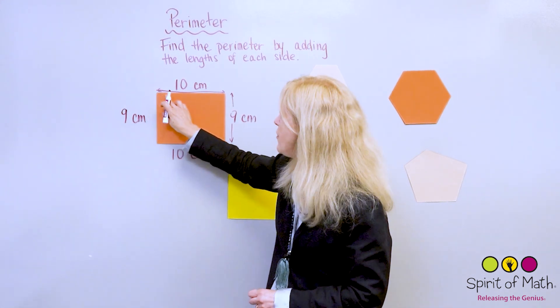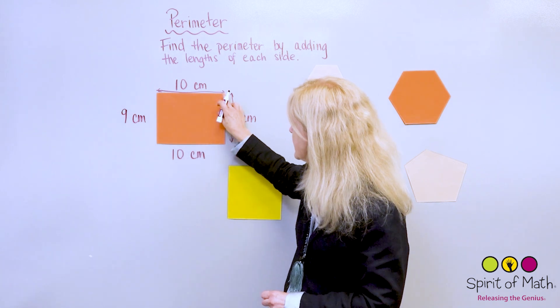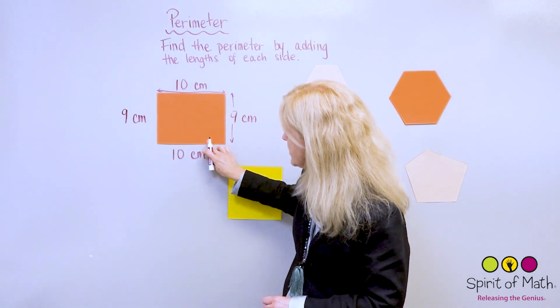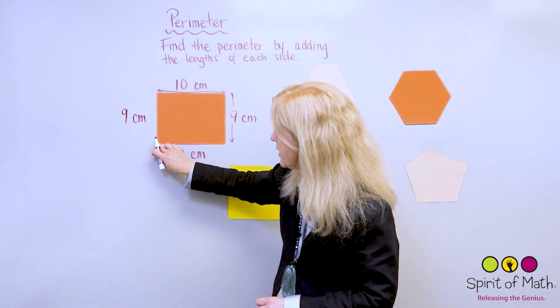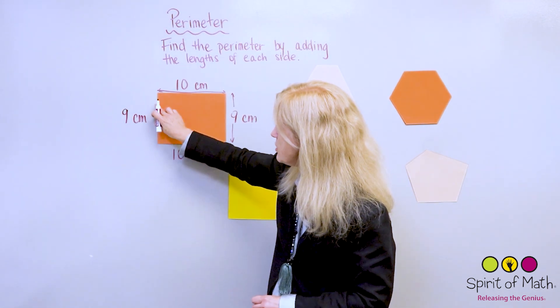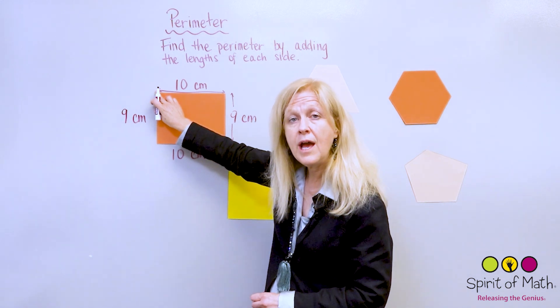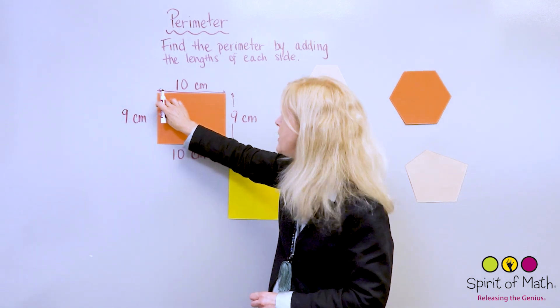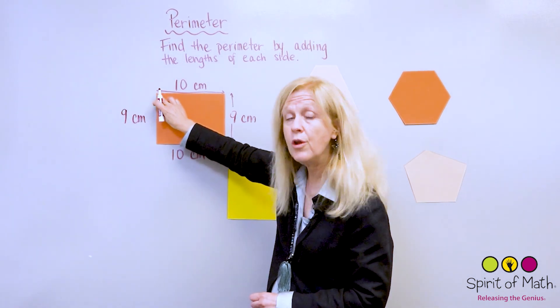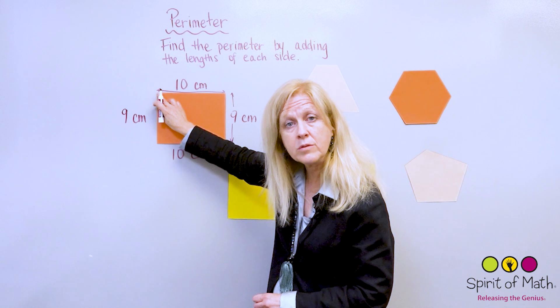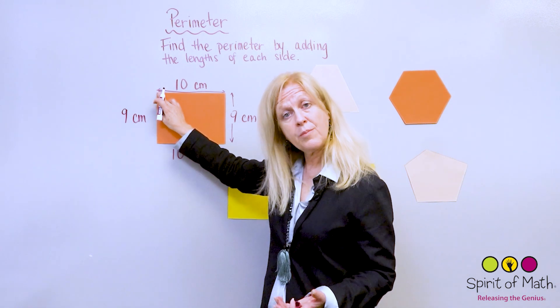So, if you added these all up, if you wanted to find the total length, then you would travel all around, and then you would find out how long it was to travel all around. That's the perimeter.